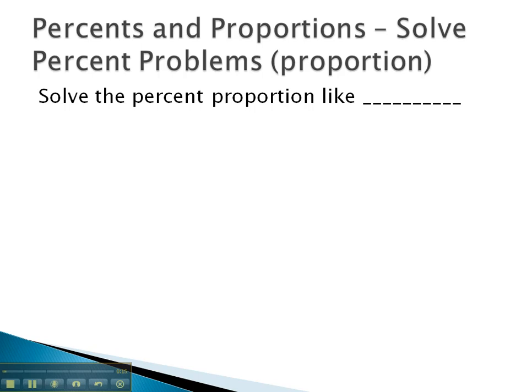The nice part about solving these percent proportions is we solve them just like we always have solved proportions. So we'll take our is over of equals percent over 100 proportion and simply solve it by using our cross product.